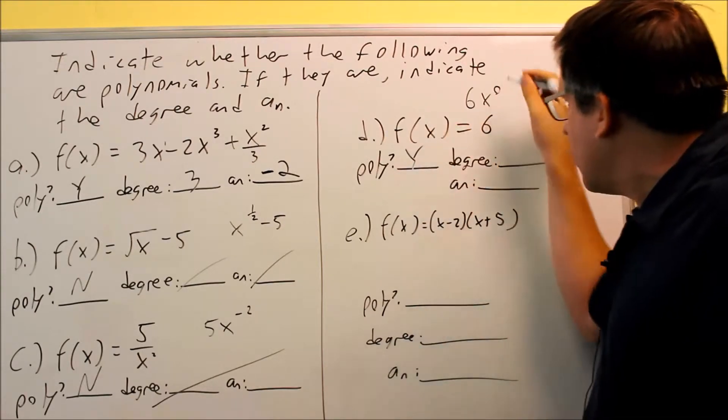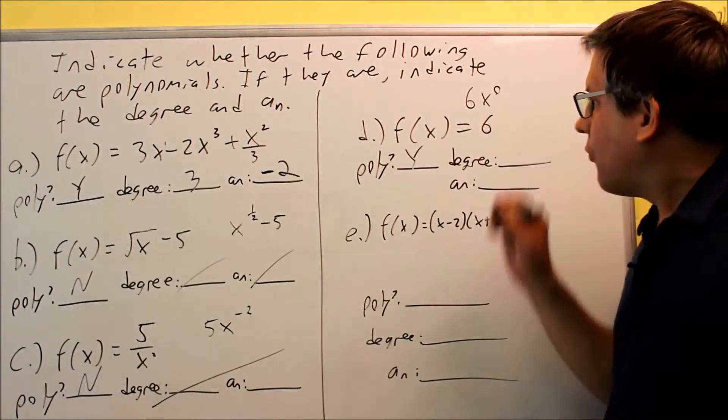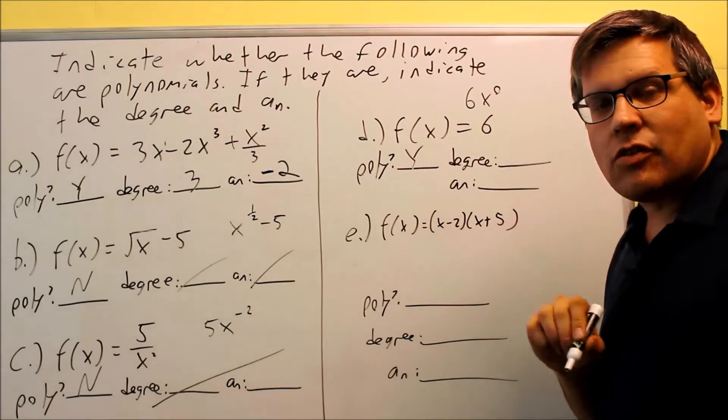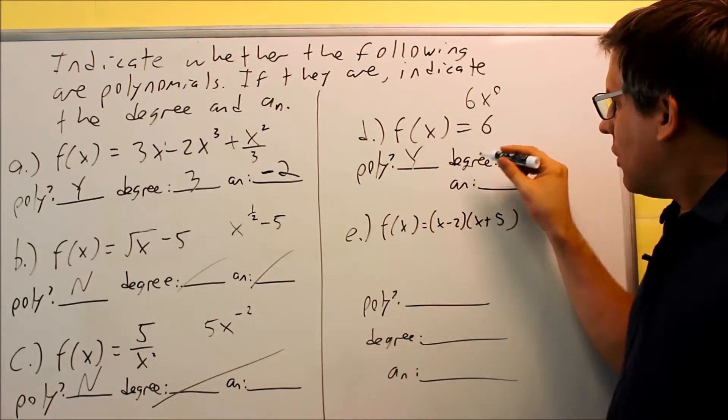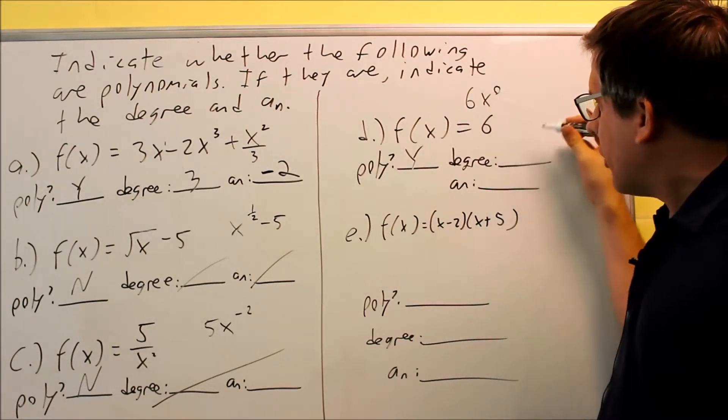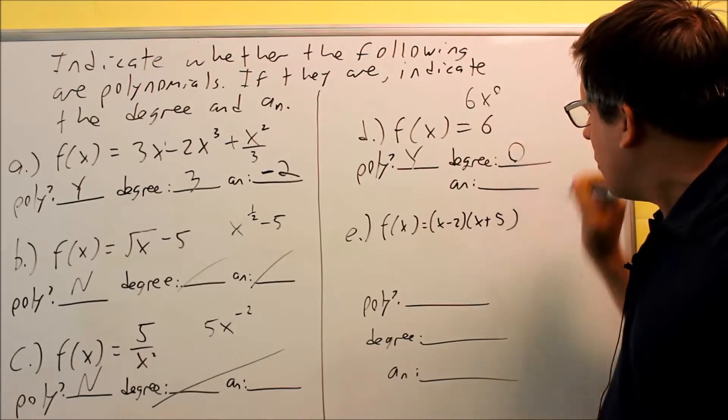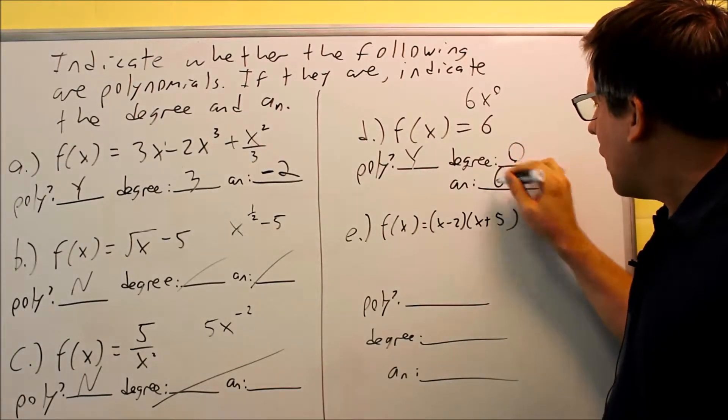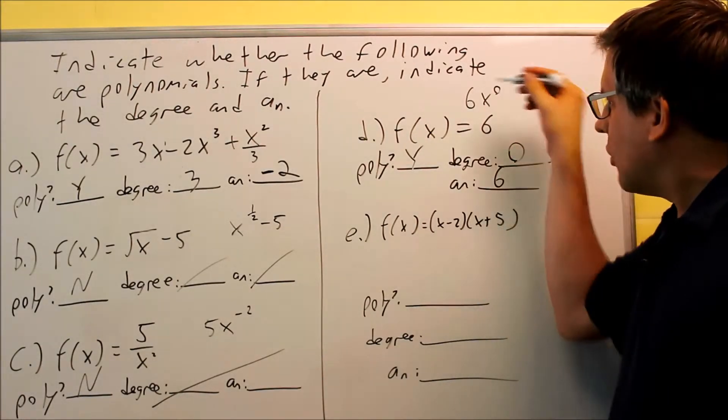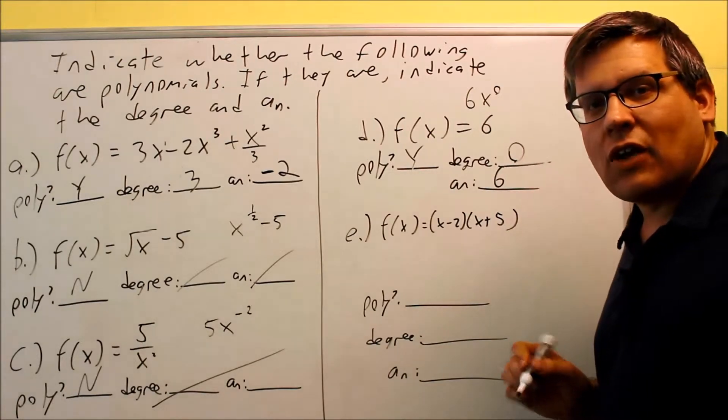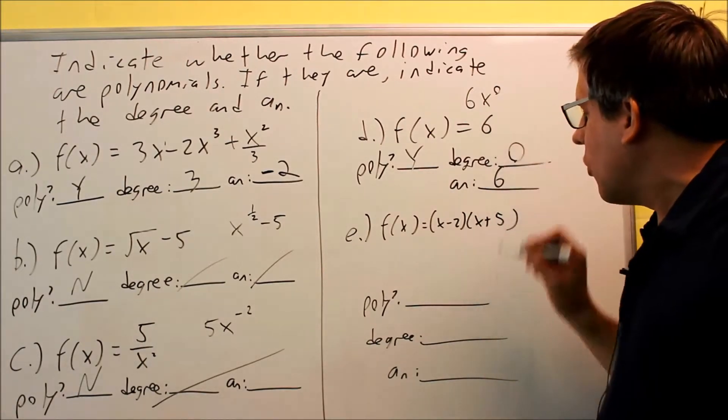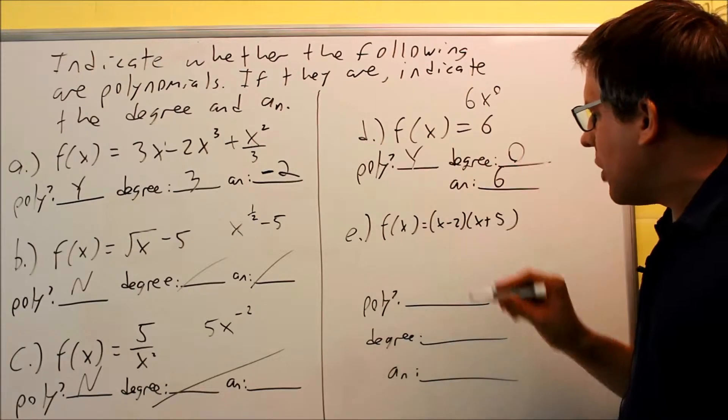That is a polynomial because 0 can be included for the exponent. You just can't use any negative ones or fractions. So the degree, well, since that's the only x that's there, your degree is going to be 0. And your a_n is going to be 6 because that's the only number that comes in front of the x that you have. That's the only term we have is just 6 only. So yes, it is a polynomial.